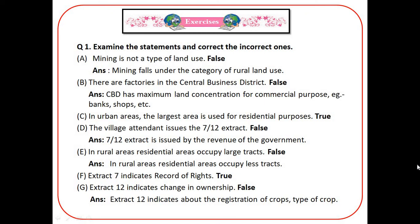Next: there are factories in the Central Business District — False. The CBD has maximum land concentration for commercial purposes, e.g. banks, shops, etc. Next: in urban areas, the largest area is used for residential purposes — True, because the population is high in urban areas. Next: the village attendant issues the Satbara extract — False. The Satbara extract is issued by the revenue department of the government. Next: in rural areas, residential areas occupy large tracts — False, they occupy less tracts.